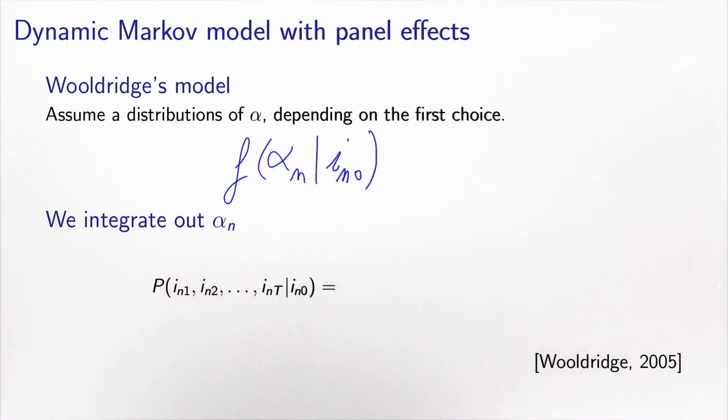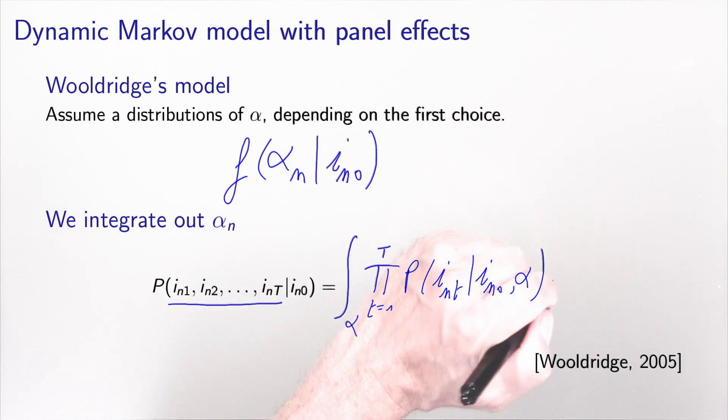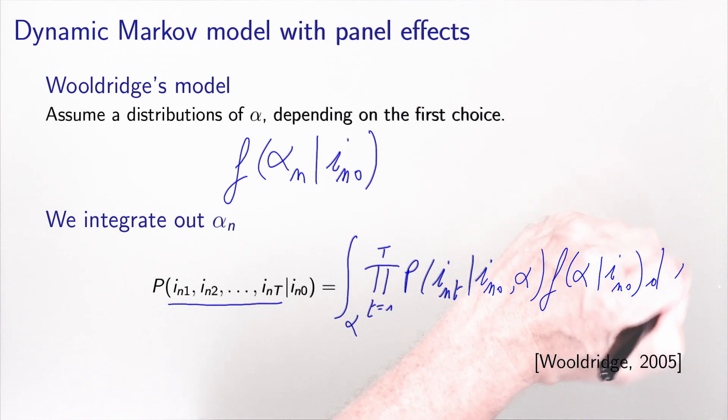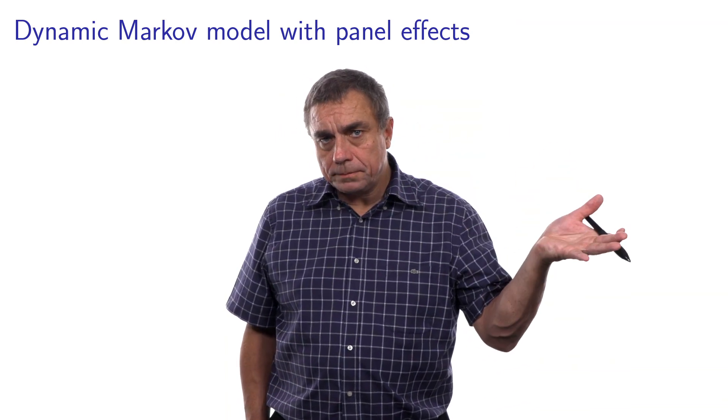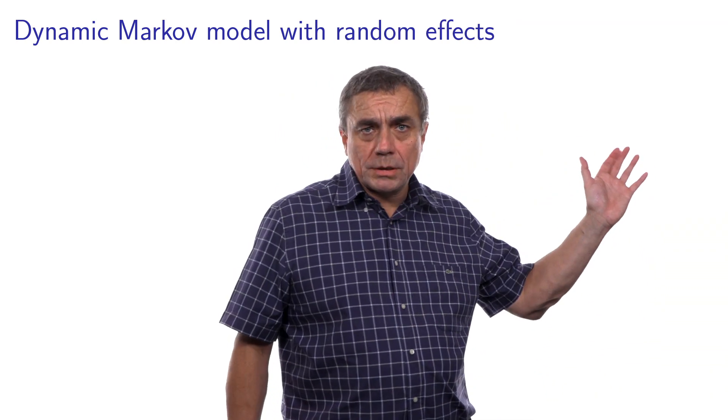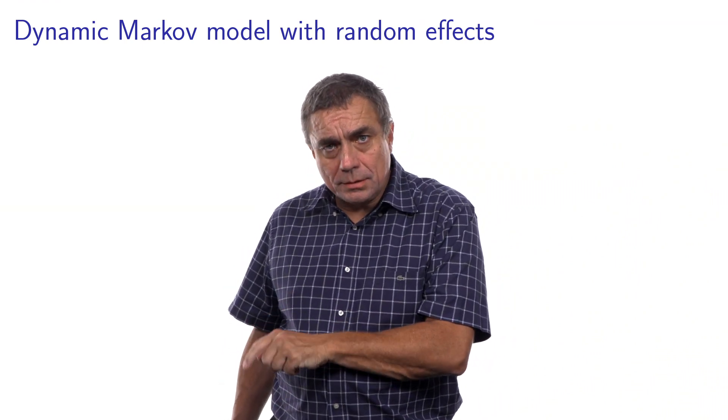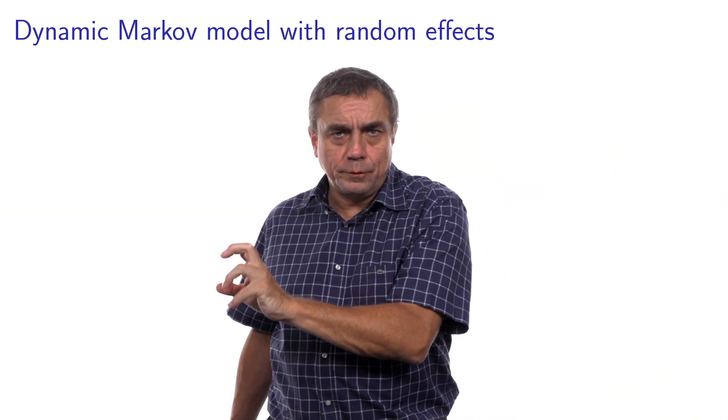So now I can integrate alpha out. So it means that I can calculate the probability of the trajectory, conditional to the first choice, as the integral over all possible alpha, of the product over time, of the probability that we have introduced in the previous slide, so the probability of the choice, conditional on the first choice, and alpha. And now, the density of alpha that I will use in this integral will be conditional on y in zero. And Wooldridge have shown that doing this will address the problem of endogeneity, what we call the initial condition problem.